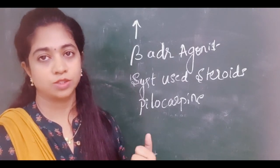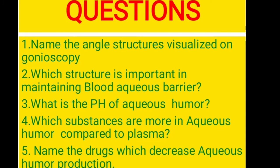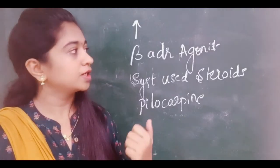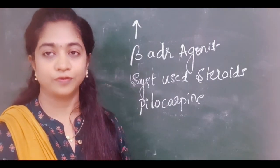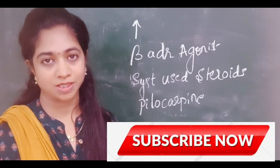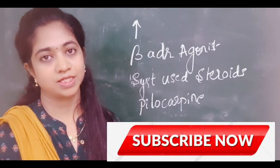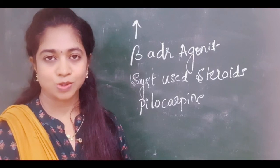So this covers aqueous humor formation, the factors influencing it, the ciliary body anatomy, and the ciliary process anatomy — everything in detail about aqueous humor dynamics. Questions for this video: name the angle structures visualized on gonioscopy; which structure is important in maintaining the blood-aqueous barrier; what is the pH of aqueous humor; which substances are more concentrated in aqueous humor compared to plasma; and name the drugs which decrease aqueous humor production. Please leave your answers in the comment section. Hope this video was useful. If you find my videos useful, please subscribe, press the bell icon, like, and share. Thank you so much.